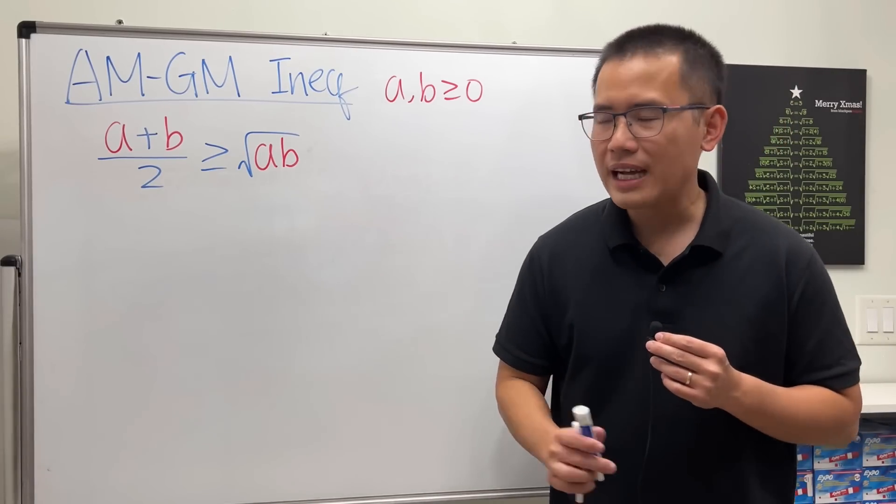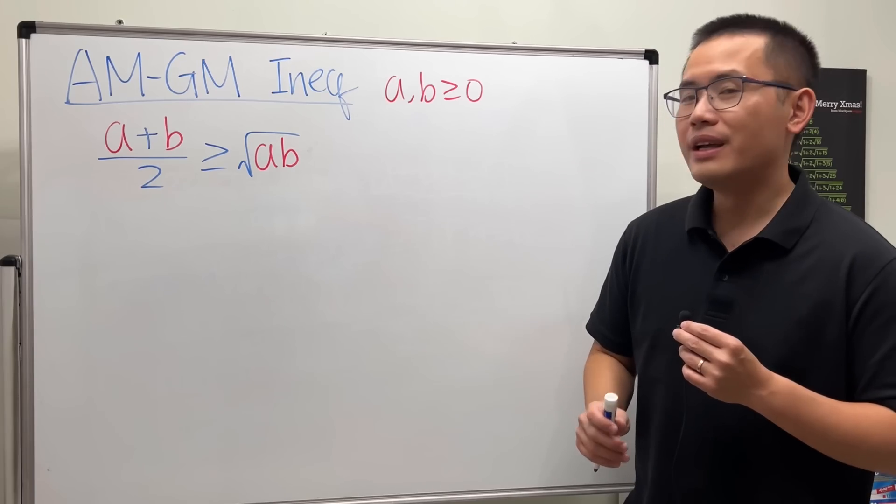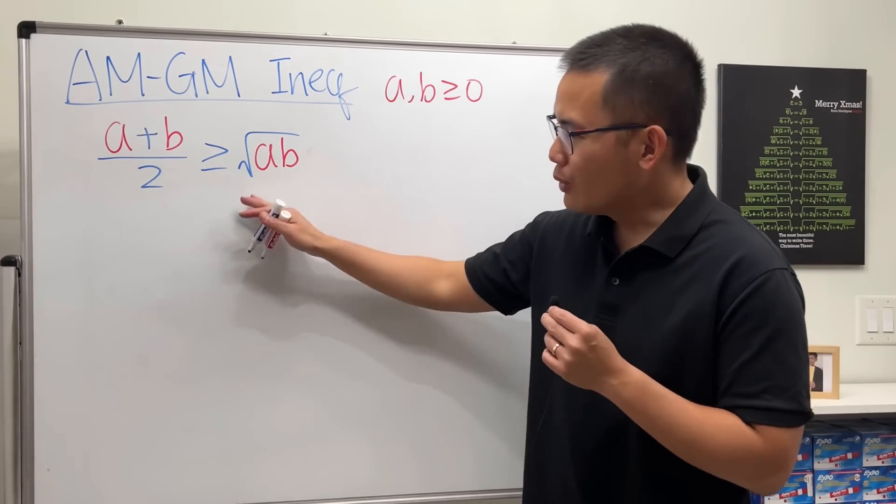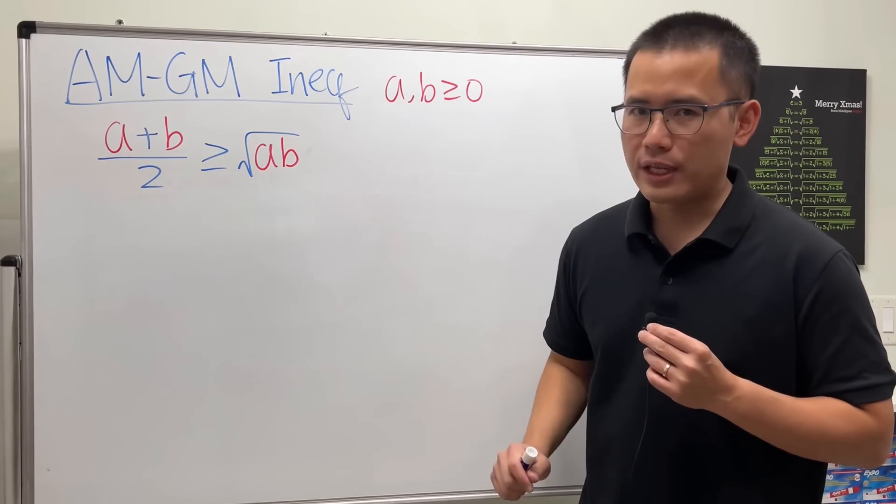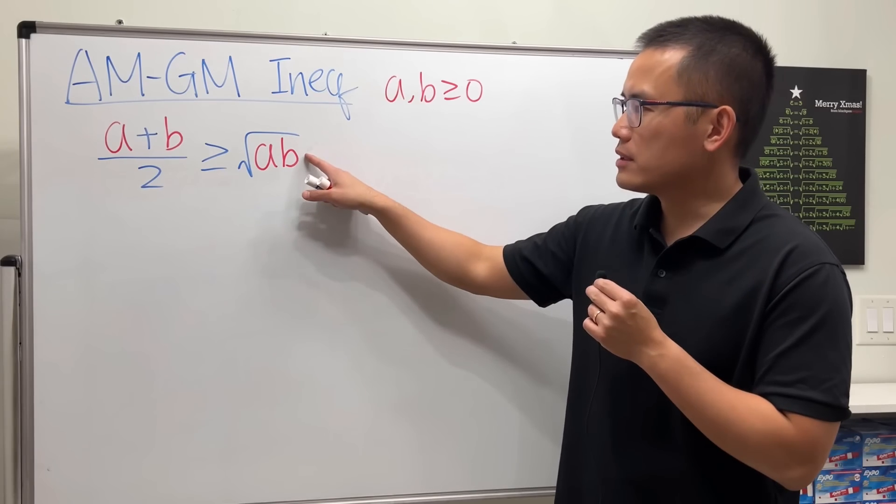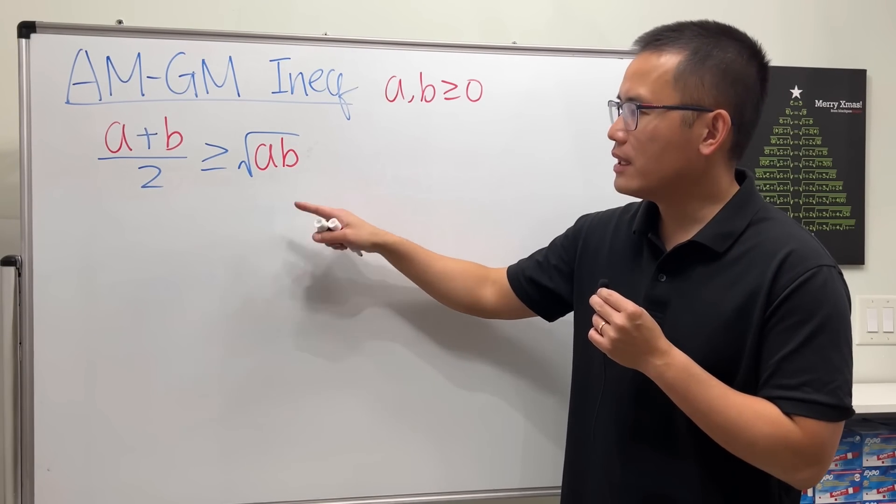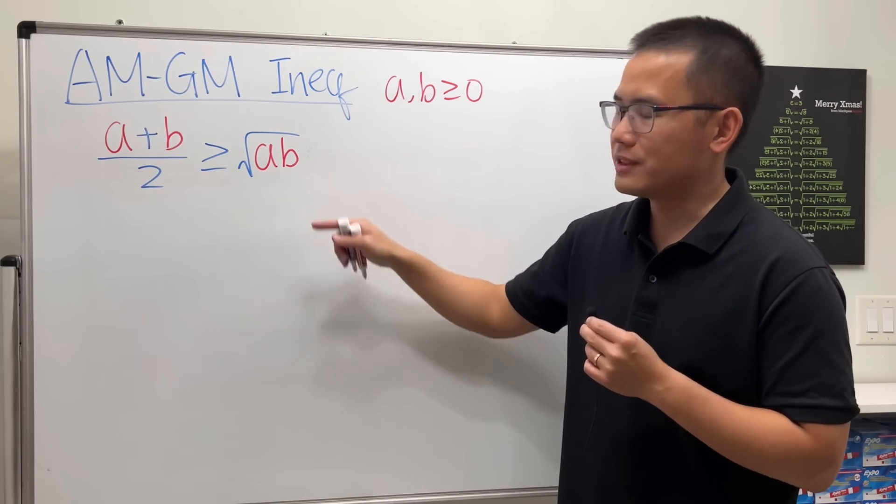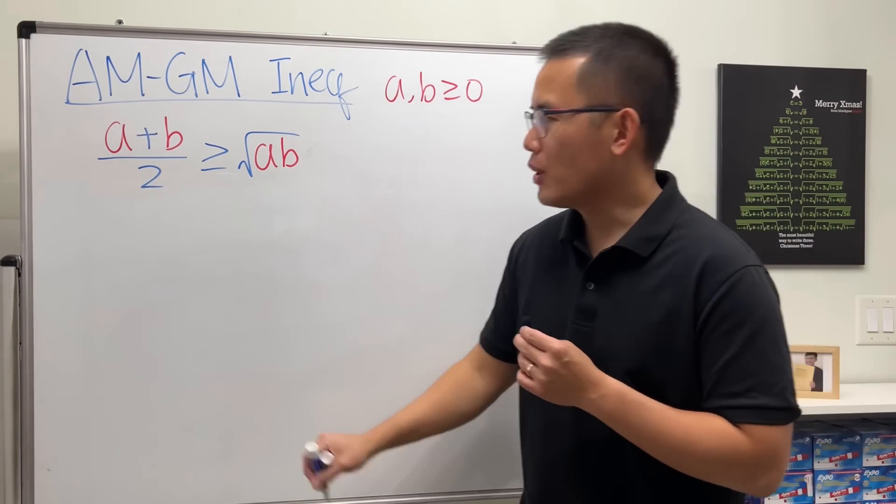Now I want to take some time to prove this inequality for you. And first, let me tell you: all the steps that we are about to do, they are all bi-directional, meaning we can start with the first one and go to the next one, and we can also go backwards—they will be true.